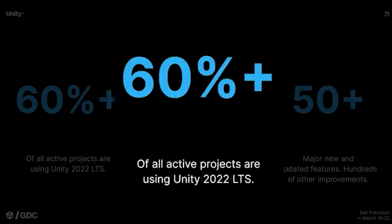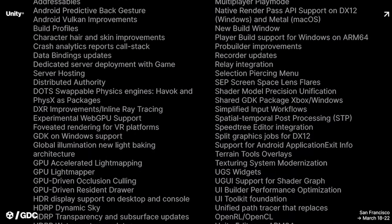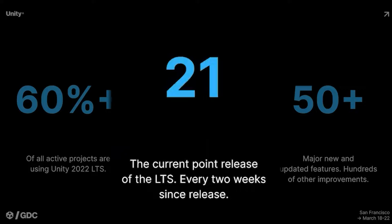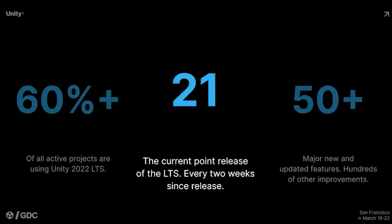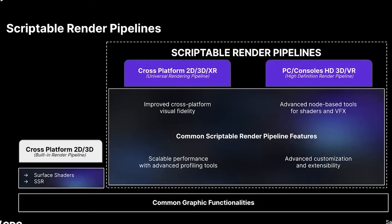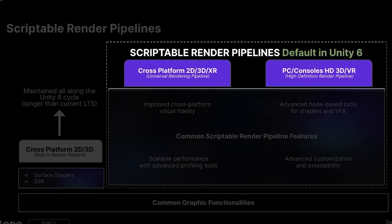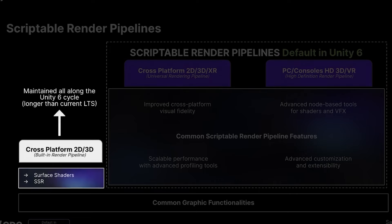60% of you are now using Unity 22 LTS or above for any new project, and they've announced 60 new features coming to Unity 6. Unity 6 preview will be out very soon and it's production ready, so of course everything still has bugs, but it's something they support for you to build your next project on. In Unity 6, URP and HDRP will be the default recommended pipelines, although the built-in render pipeline will have longer-term support across Unity 6 and even past LTS.